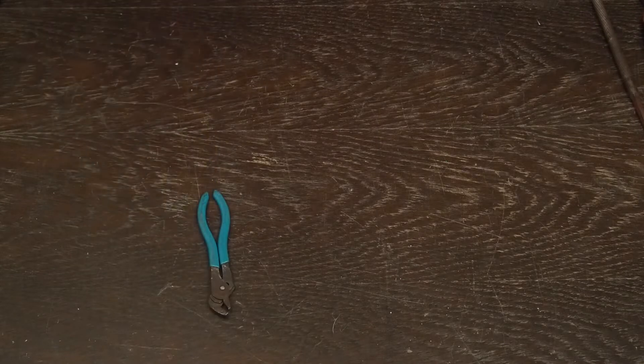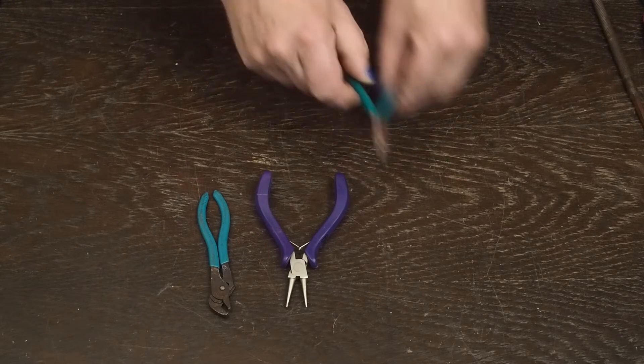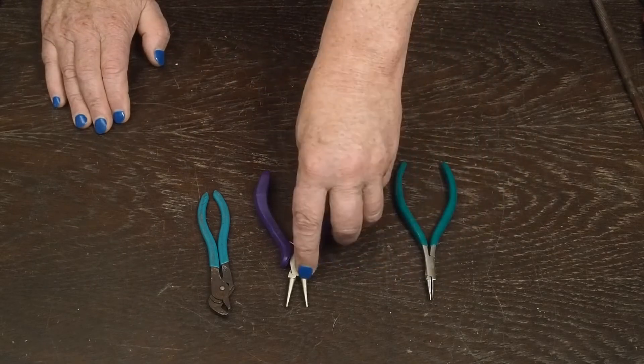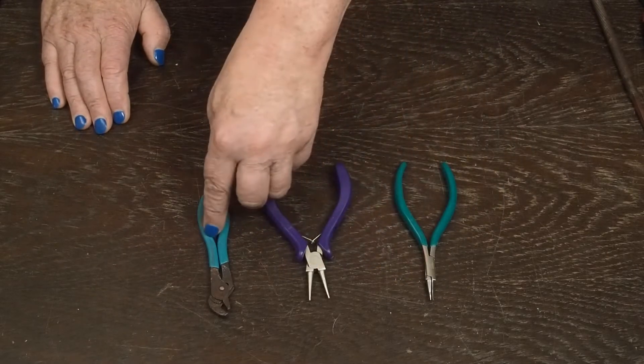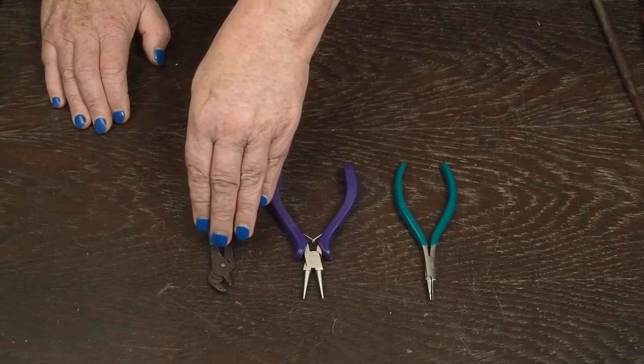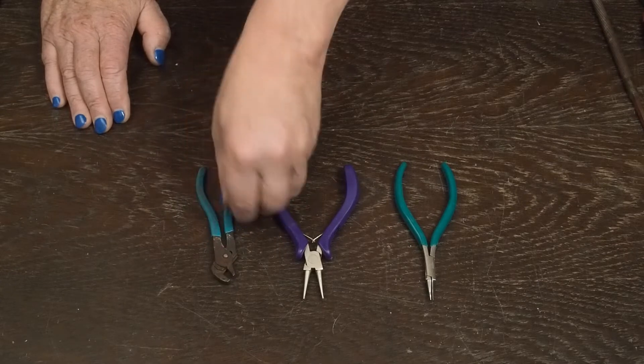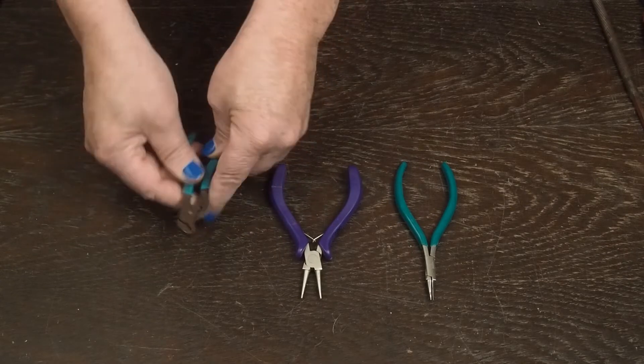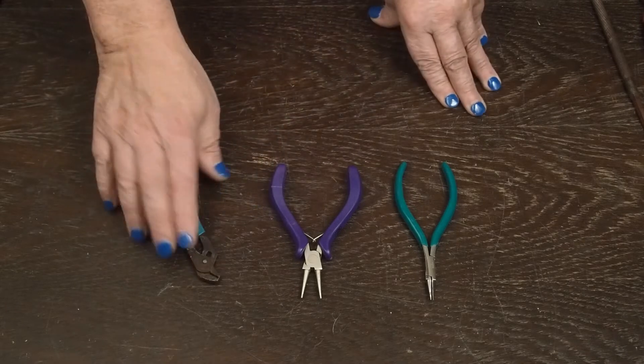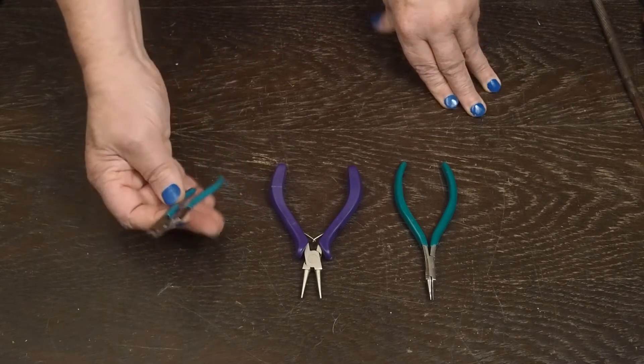Another thing that's really handy is having some different kinds of pliers. I use these little jeweler pliers. These have flat jaws. These have round jaws. This little small pair of channel locks is super handy for holding nuts and doing bending things over that you need. You can tell these have been around a while.